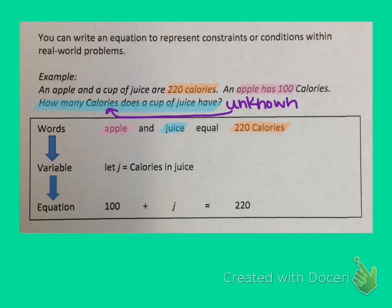The unknown is the number of calories in juice. And for the unknown, that's where the variable comes in. The variable is that letter we use to represent an unknown value. So our variable is going to represent the calories in juice, and so I chose j to represent the number of calories in the juice right here.